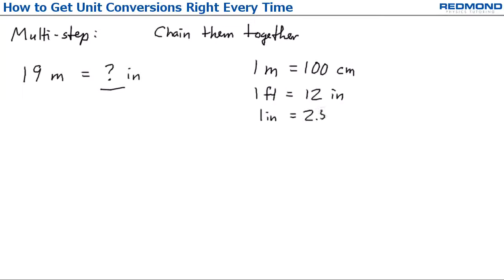How about a multi-step problem like converting 19 meters to inches? Just chain the conversion factors together. I can look up the conversion factors. One meter is 100 centimeters, one foot is 12 inches, and one inch is 2.54 centimeters. If you're not sure what to use, just write them down and link them together visually on paper.